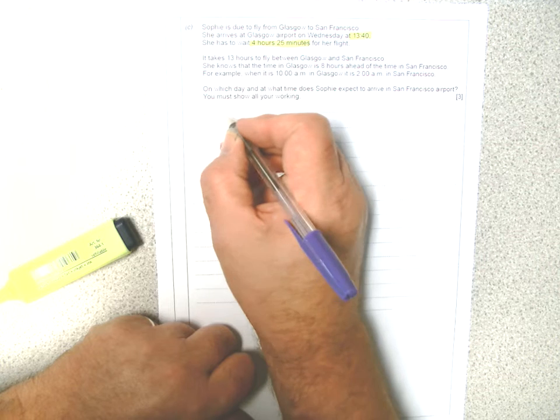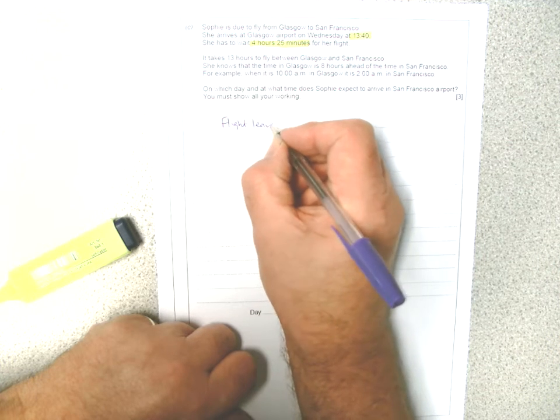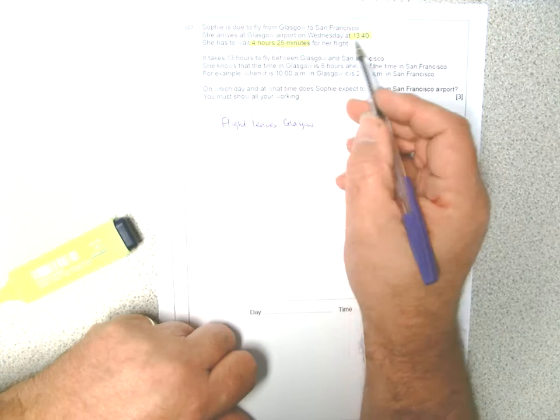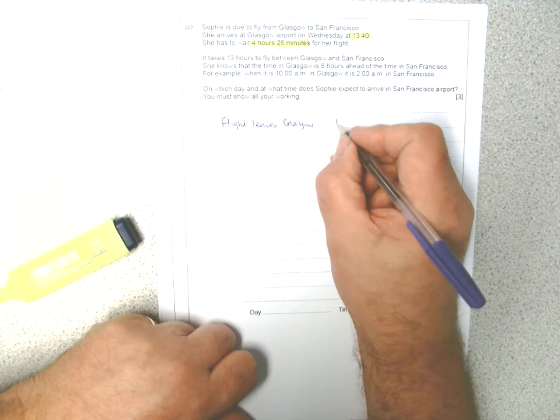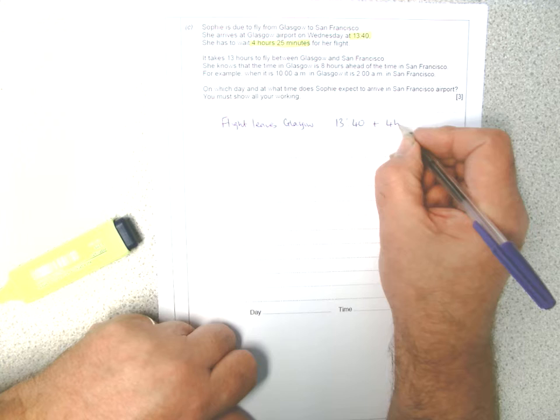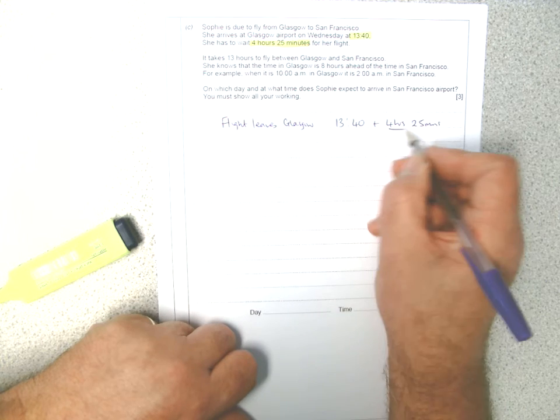Right, so the flight leaves Glasgow four hours and 25 minutes after 1340. So it's 1340, I'm going to add on four hours and 25 minutes. If I add on the four hours...